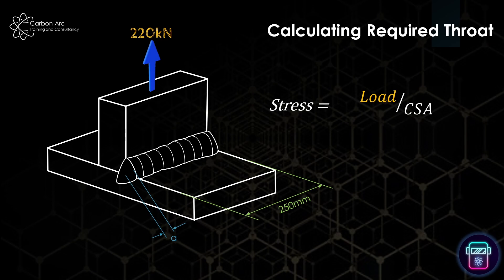So let's start with our standard equation, which is stress equals load over cross-sectional area. We then know we need to find throat thickness, so we need to move the cross-sectional area across to the subject side of the equation. We can do that just by swapping cross-sectional area and stress. So cross-sectional area equals load divided by stress.